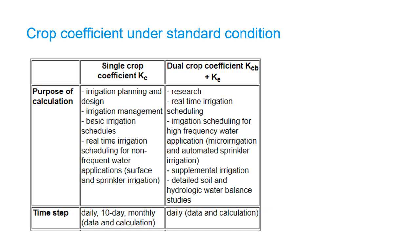The first method is the single crop coefficient Kc, and the second is the dual crop coefficient KcB plus Ke, which are the basal crop coefficient and soil evaporation coefficient. The first method is mainly used for non-frequent irrigations, while the second method is for high-frequency irrigation.